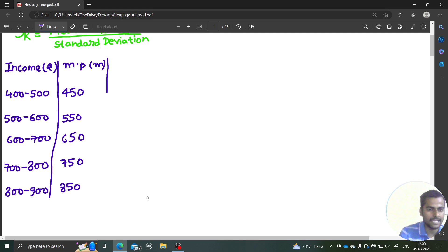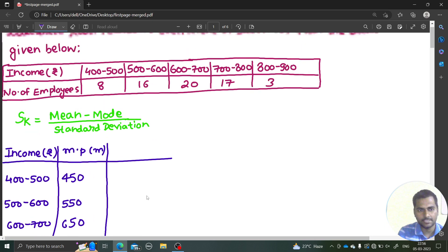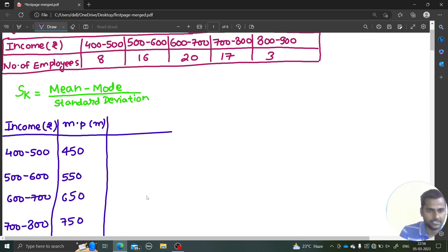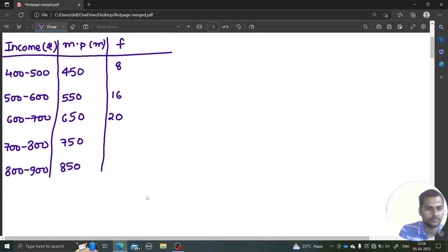Next, we'll be writing the frequency as it is from the data given in the question. So frequency F is 8, 16, 20, 17, 3. That's what we needed from the question. Now what's next is we'll reduce this data a bit by doing one simple adjustment.